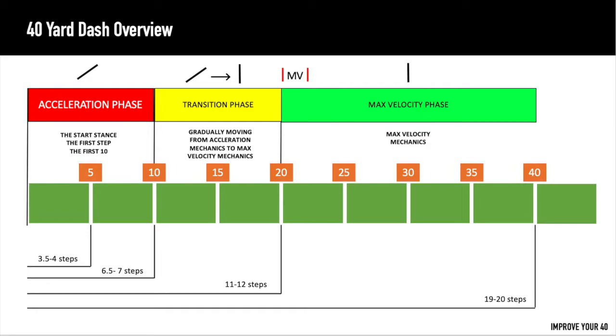So the 40-yard dash comprises of three phases: the acceleration phase, the transition phase, and the max velocity phase. Now up top here,